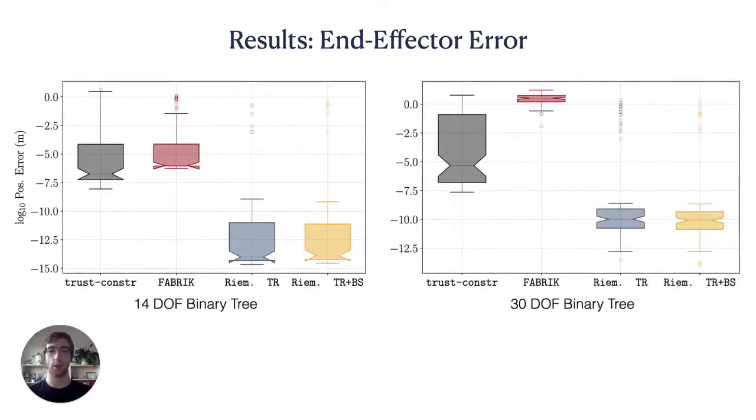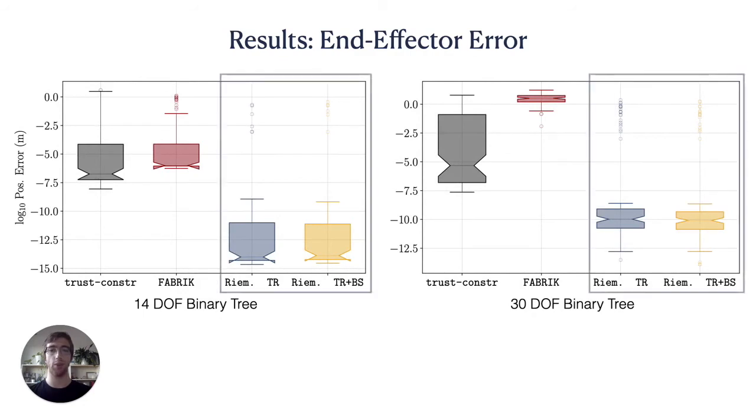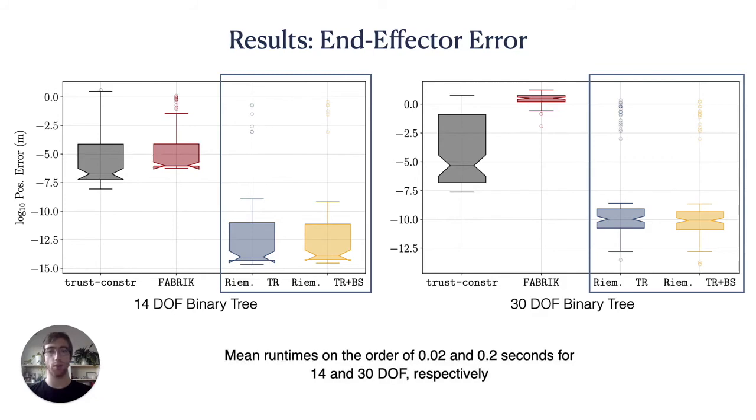These box and whisker plots demonstrate that our methods, in blue and yellow, exhibit considerably lower position error on high degree of freedom planar tree manipulators. Our Python implementation also runs quite fast for an approach that has not been tuned for performance.